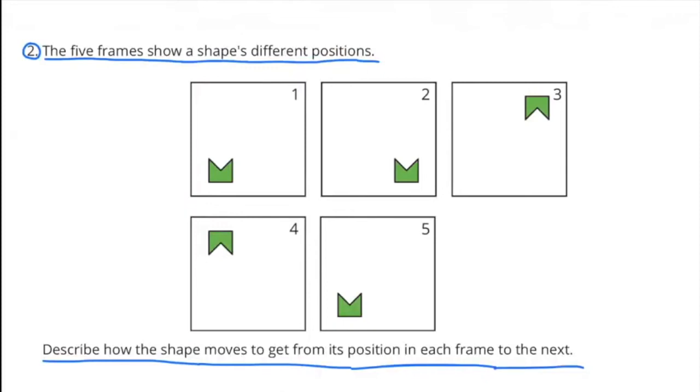Number 2. The 5 frames show a shape's different positions. Describe how the shape moves to get from its position in each frame to the next.